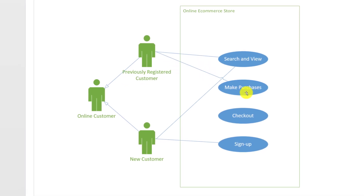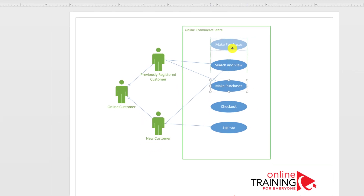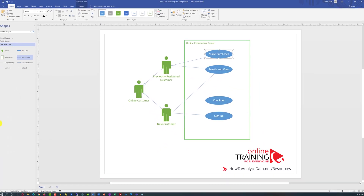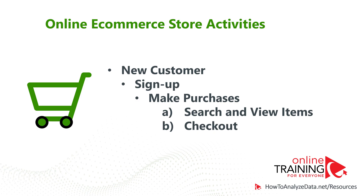I personally don't like when lines on the diagram intersect, so to avoid this, we can move Make Purchases above Search and View. To better understand the sequence of activities at the online store, we will use the hierarchy shown in the diagram. UML provides an exceptional diagram type for this — the activity diagram — so make sure to search for my other video on that topic.